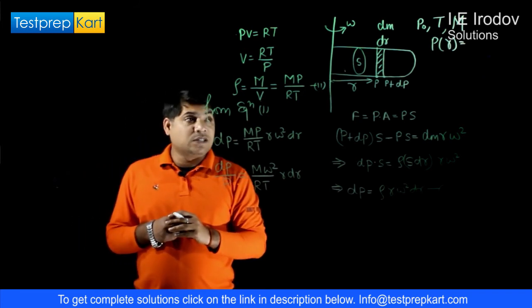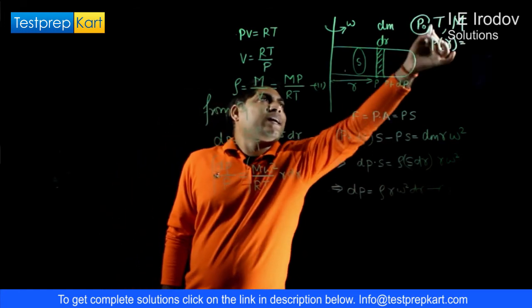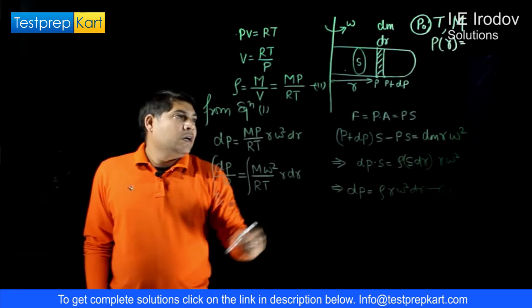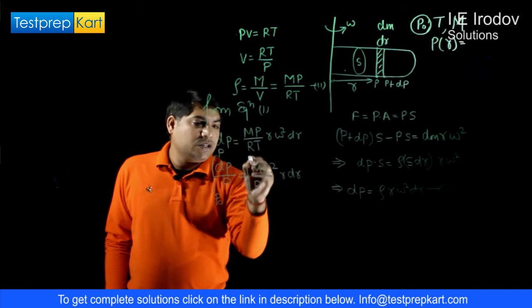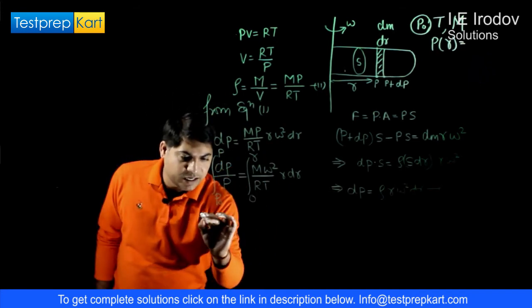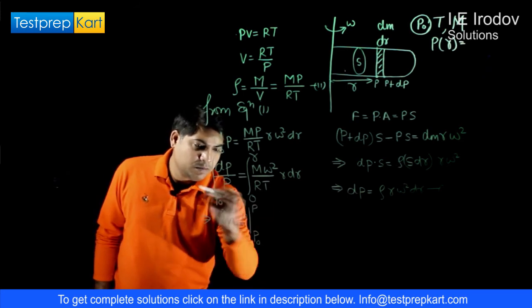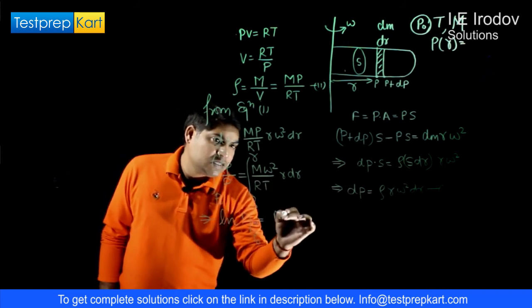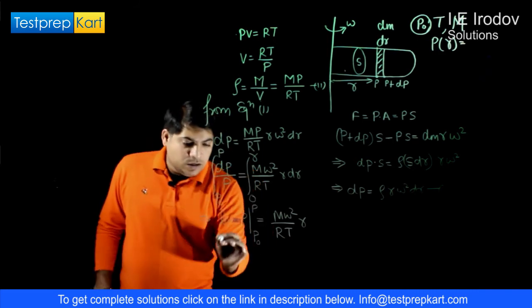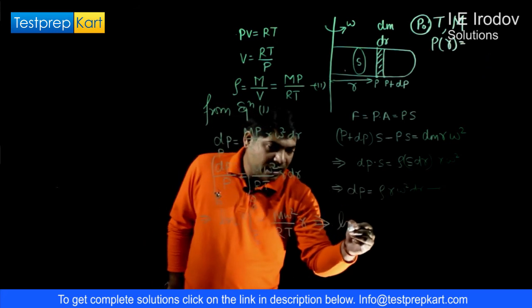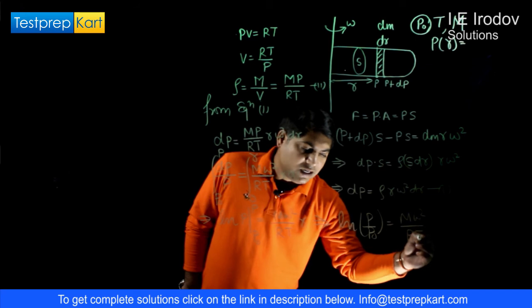We have to check the pressure as a function of R, so we take the integration. In the question it is given that the pressure at the open end is P naught, so we start from P naught. As we move away from this axis, pressure is P, and initially distance was 0 and this distance is R. If we integrate, we get natural log ln P with limit going from P naught to P, and M omega square over RT into R squared over 2 with limit from 0 to R. This reduces to ln P over P naught equals M omega square over RT into R squared over 2.